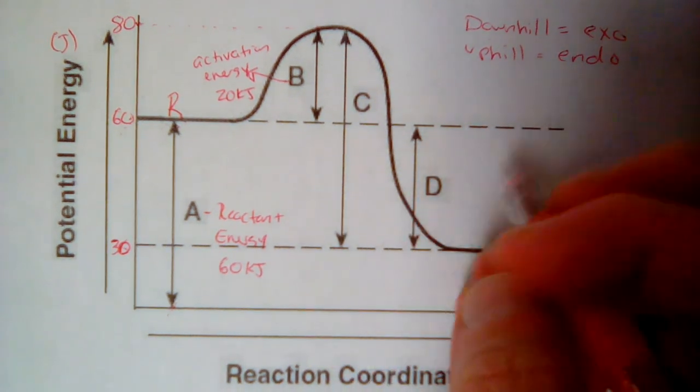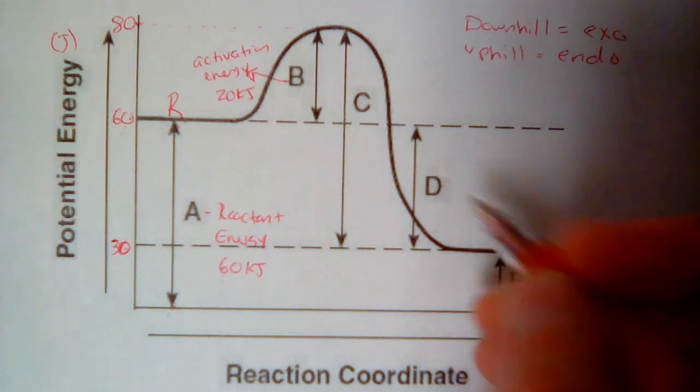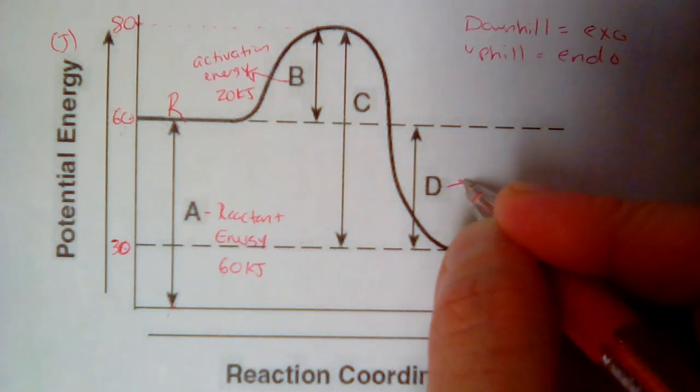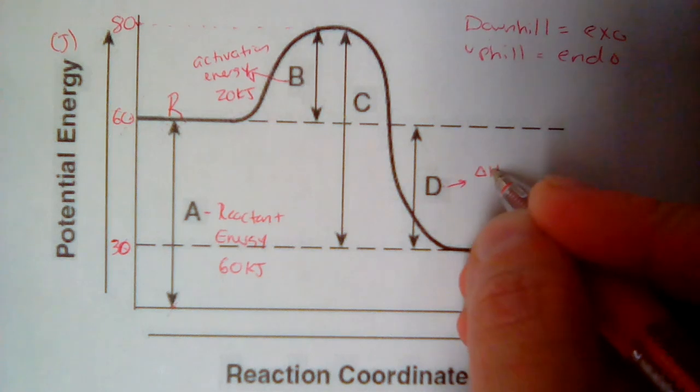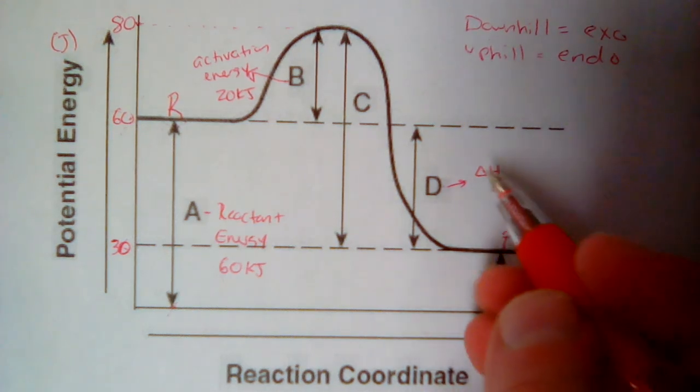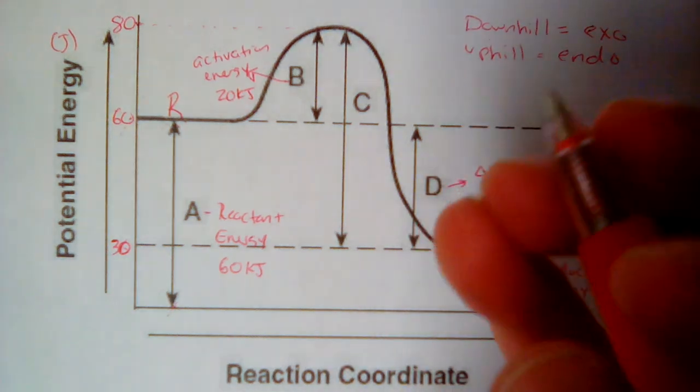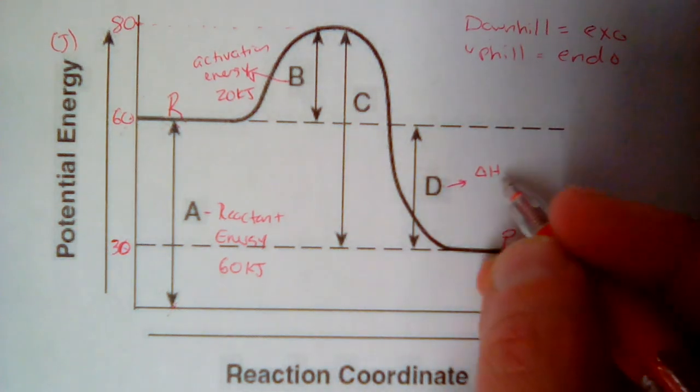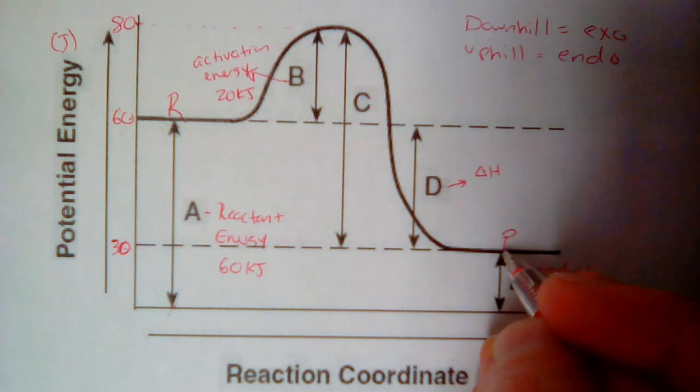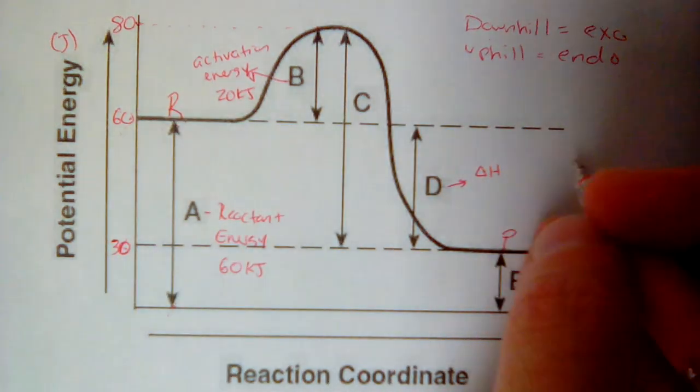The only other one on here that we need to really be able to work with is D. D is delta H, the change in energy that occurs. Delta is change, H is heat in this case. That's the change in the heat energy that's happening in this reaction. And the way we figure this one out is we always do the products minus the reactants.